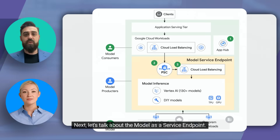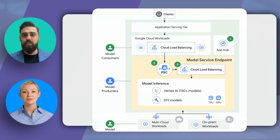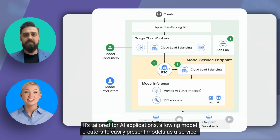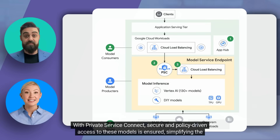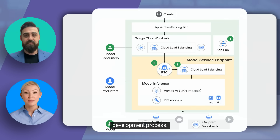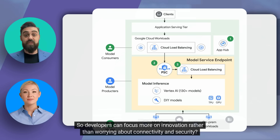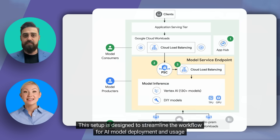Next, let's talk about the model-as-a-service endpoint. It's tailored for AI applications, allowing model creators to easily present models as a service. With Private Service Connect, secure and policy-driven access to these models is ensured, simplifying the development process. So developers can focus more on innovation rather than worrying about connectivity and security. This setup is designed to streamline the workflow for AI model deployment and usage.